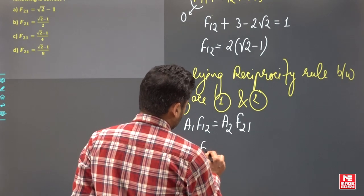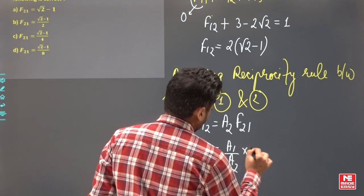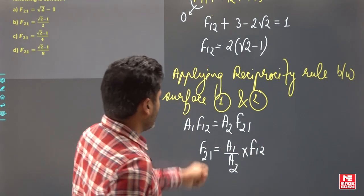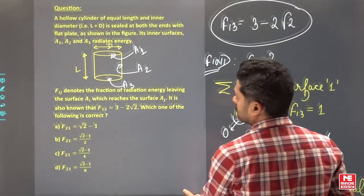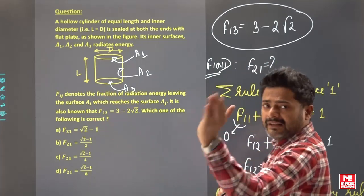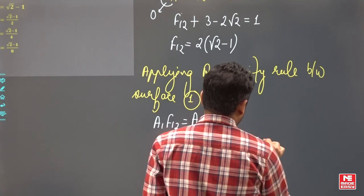A1 is a circle and A2 is a curved surface. So F21 equals A1 by A2 times F12. A1 is the circle area and A2 is the cylinder curved surface area.